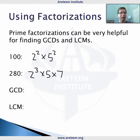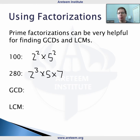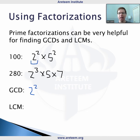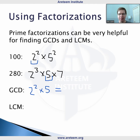The nice thing about prime factorizations is that we can calculate GCDs and LCMs using those primes separately. For the greatest common divisor, we look at the powers they have in common. Both 100 and 280 have a 2 squared, so the GCD will include 2 squared. They also have a 5 in common. So we have 2 squared times 5, giving us a GCD of 20.